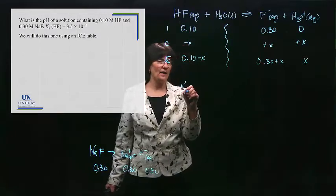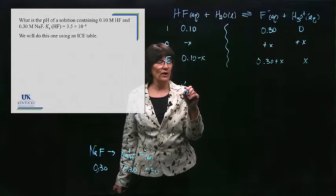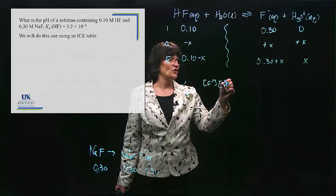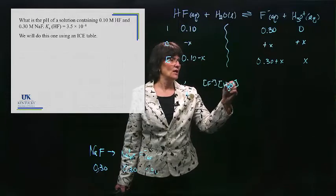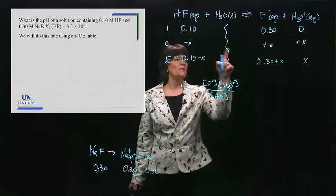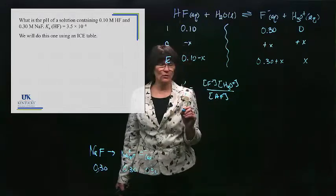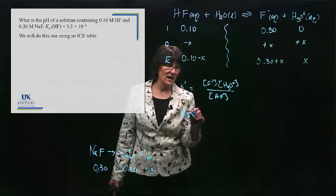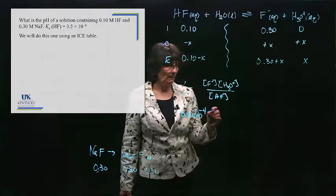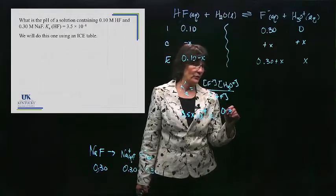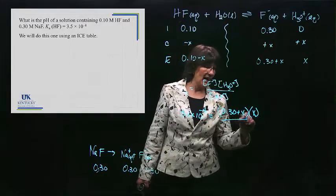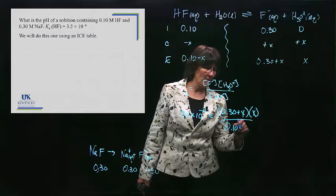Well, we need a Ka value, and we know that Ka, and we'll go ahead and write the expression, is the F minus concentration, times the H3O plus concentration, divided by the HF concentration. So I'll plug in everything I know. Ka's value is given as 3.5 times 10 to the minus 4. OK. F minus is 0.30 plus X, and then we have X, and we have 0.10 minus X.